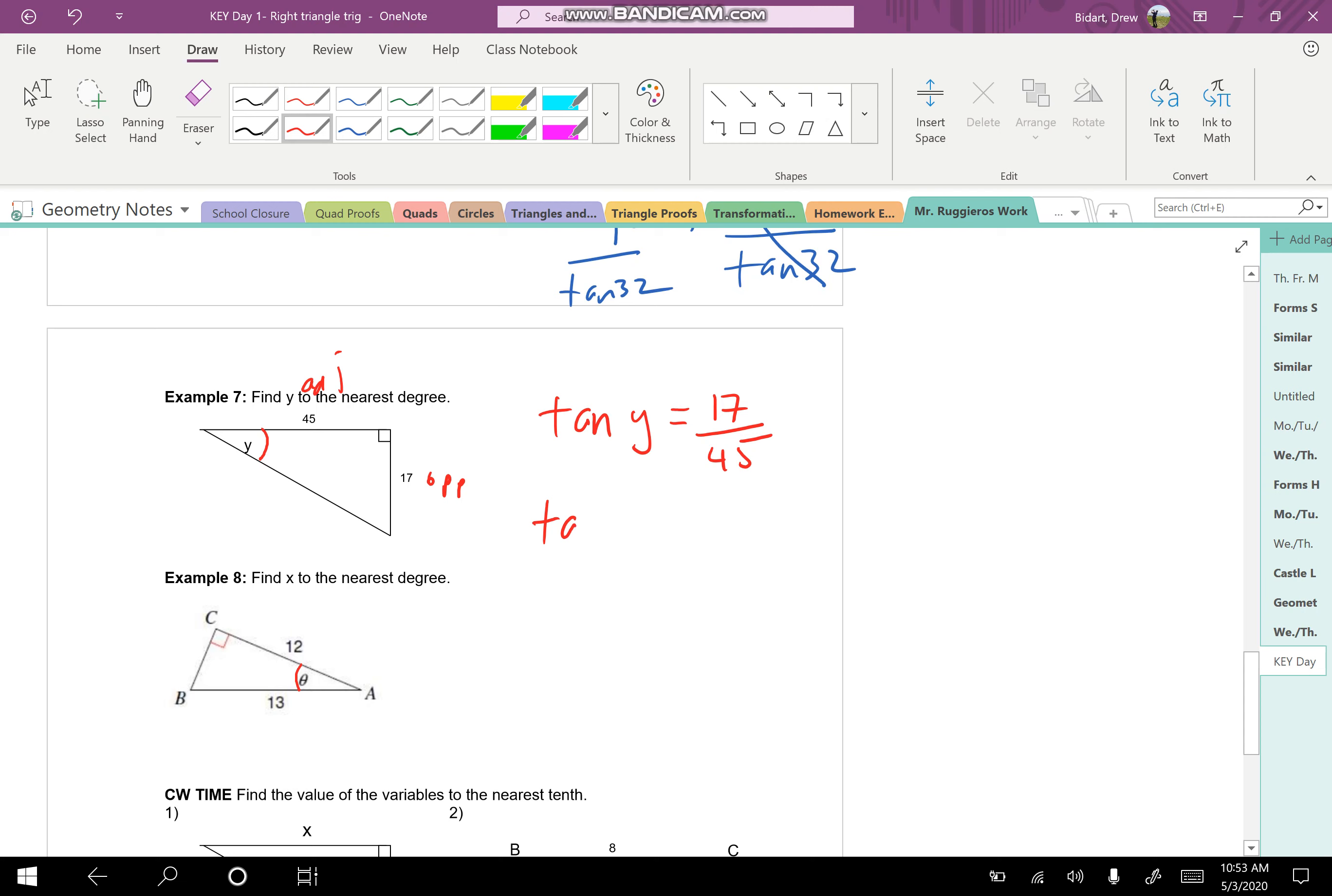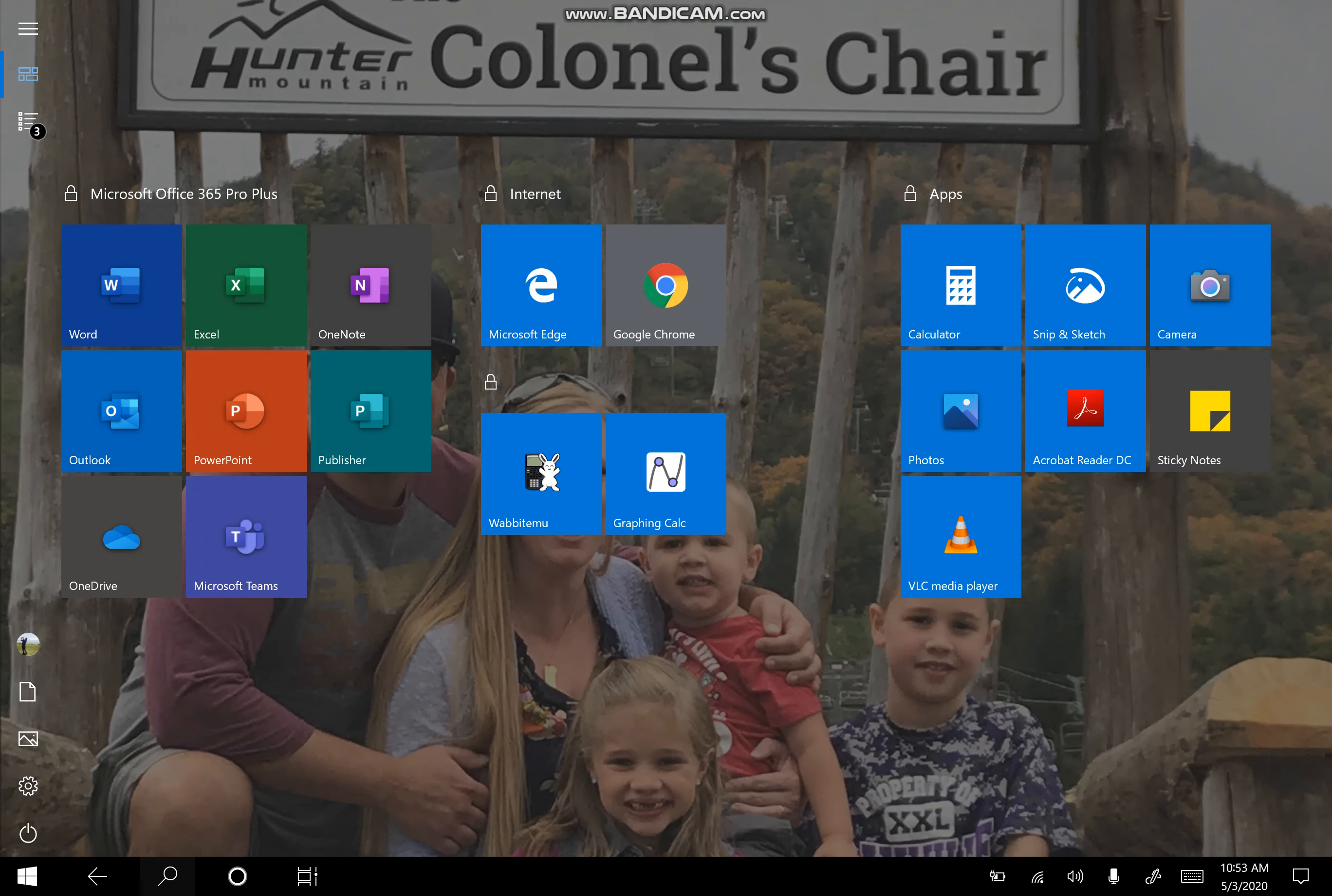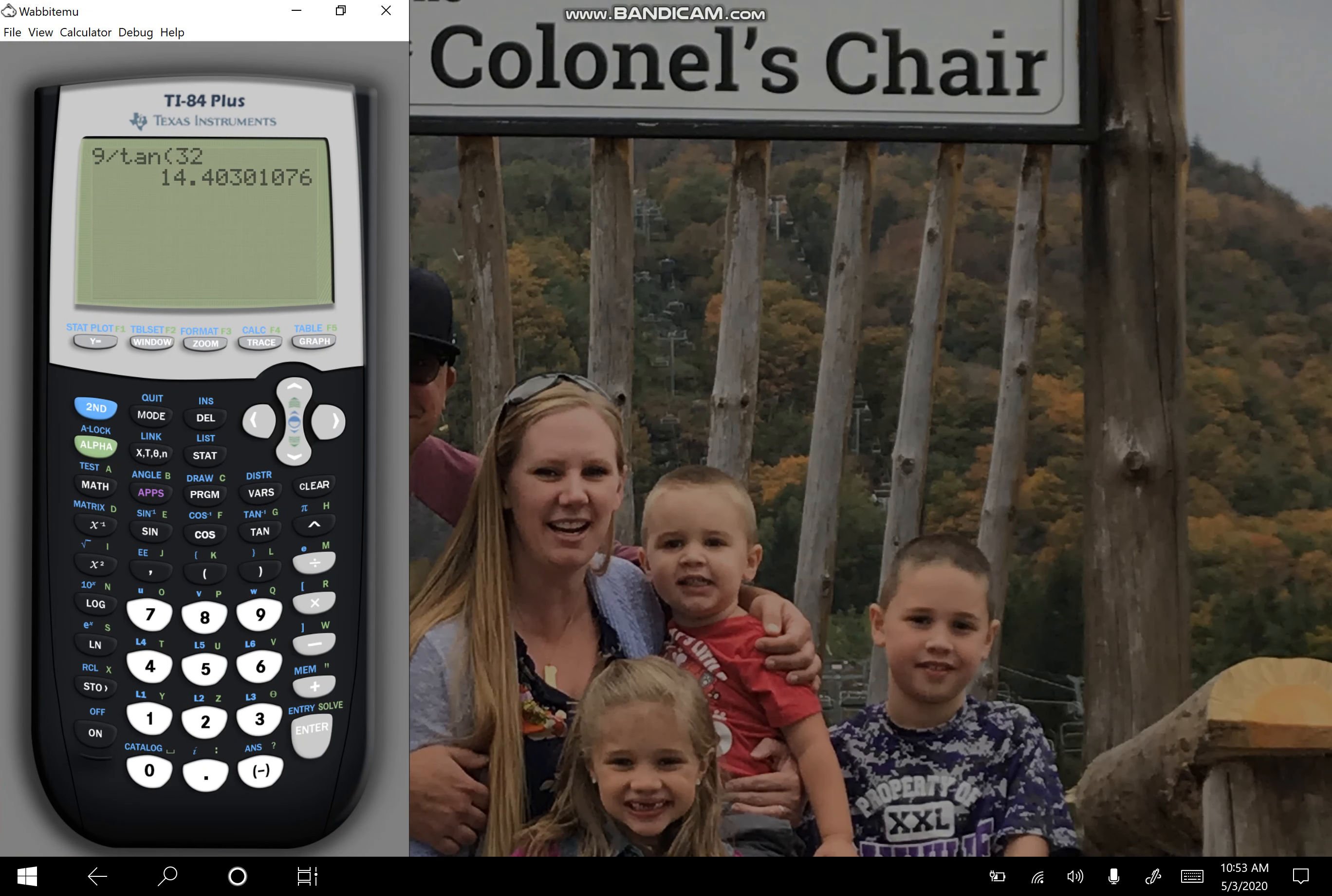So this is how we're going to write. The tan of the angle, y, is equal to the opposite over the adjacent. Now, please do not cross-multiply here. That's going to be a dead end. What you actually have to do in your calculator is something called inverse. So the inverse is denoted with a little minus 1 of 17 over 45. That's going to be what y is.